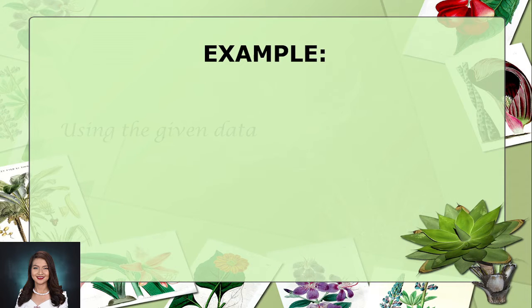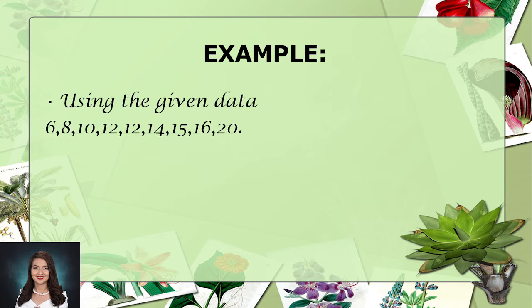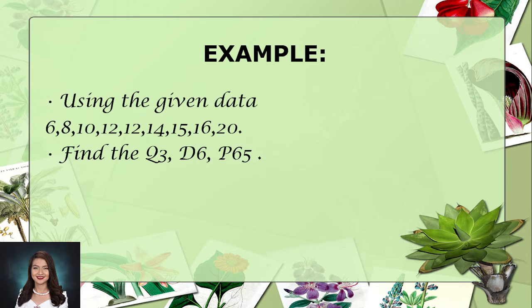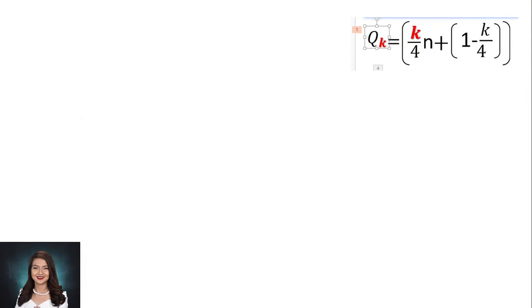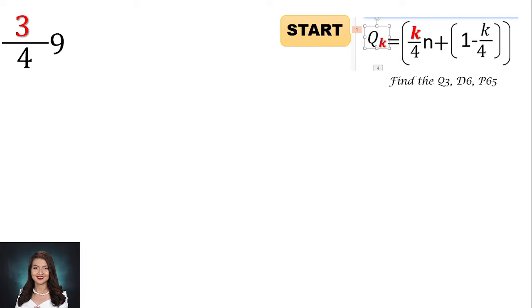So let's take a look at this example. Using the given data 6, 8, 10, 12, 12, 14, 15, 16, and 20, we're going to find Quartile 3, Decile 6, and Percentile 65. We're going to apply the formula that we have discussed earlier. In this example, our n, or number of cases, is equal to 9. Now let's compute Quartile 3. QK is equal to K over 4 times n, so we have 3 over 4, and our n is 9.